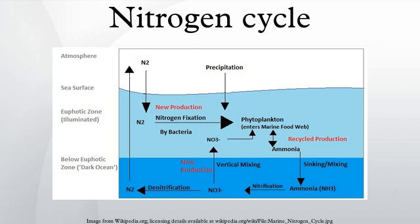In the process of anaerobic ammonium oxidation, nitrite and ammonium are converted directly into molecular nitrogen gas. This process makes up a major proportion of nitrogen conversion in the oceans. Though nitrogen fixation is the primary source of plant-available nitrogen in most ecosystems, in areas with nitrogen-rich bedrock, the breakdown of this rock also serves as a nitrogen source.